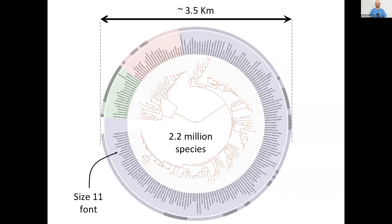I'm James Rosendale from Imperial College and the not-for-profit organisation OneZoom. My dream for the last 10 years has been to create something rather like Google Earth, but for biology — something that enables people to explore the whole variety of life and see how it evolved on one page, just as Google Earth has done for everyone with global geography.